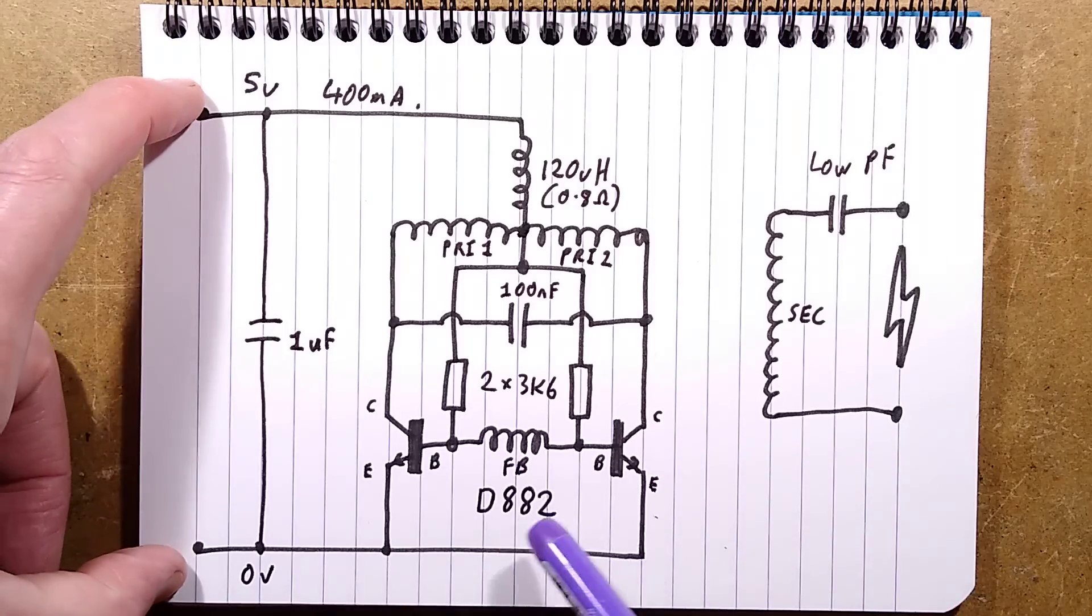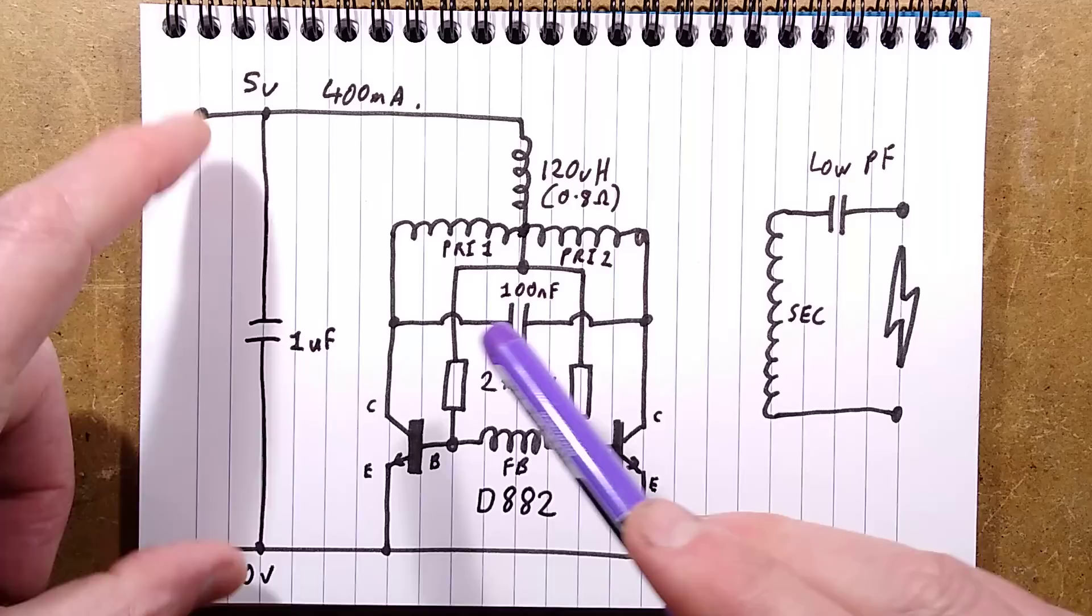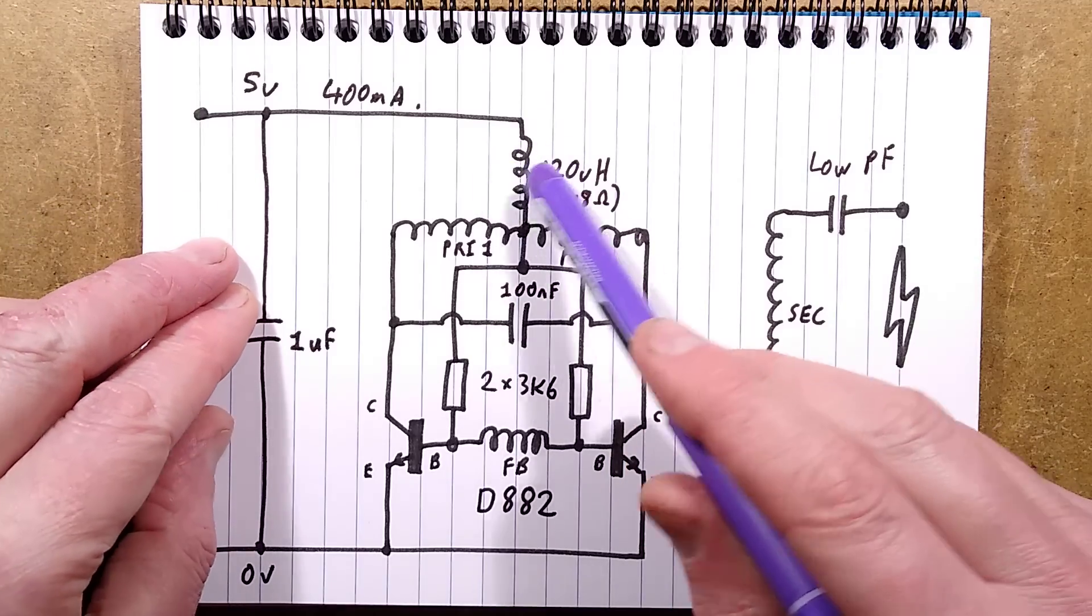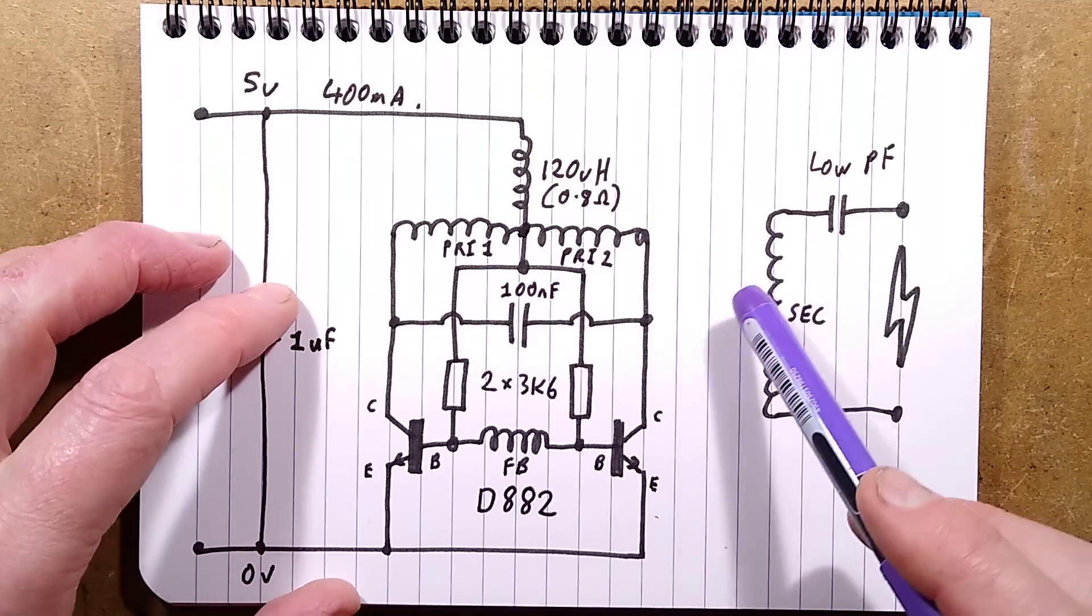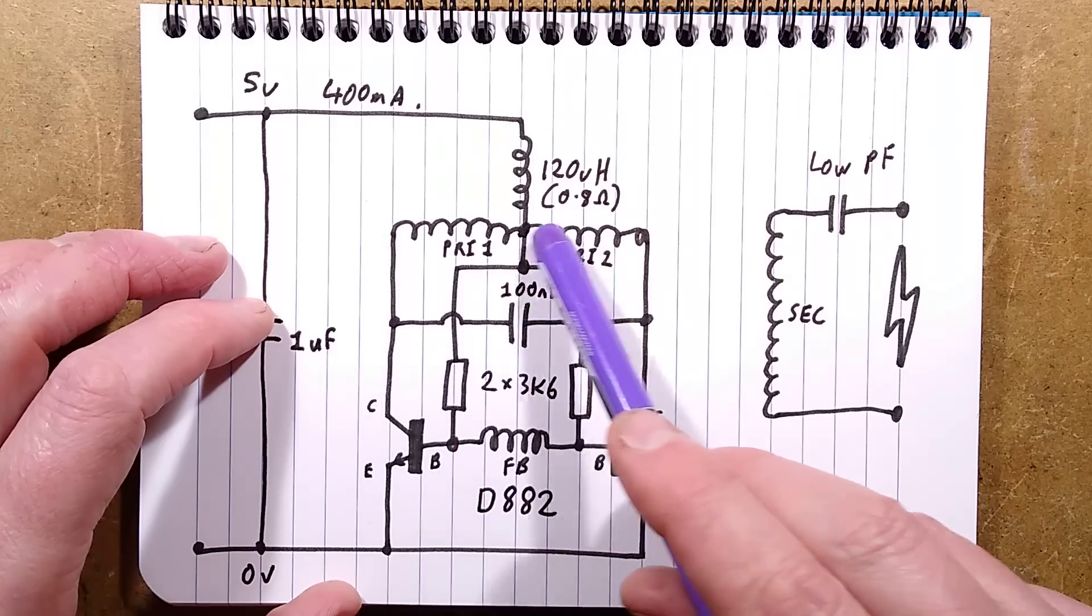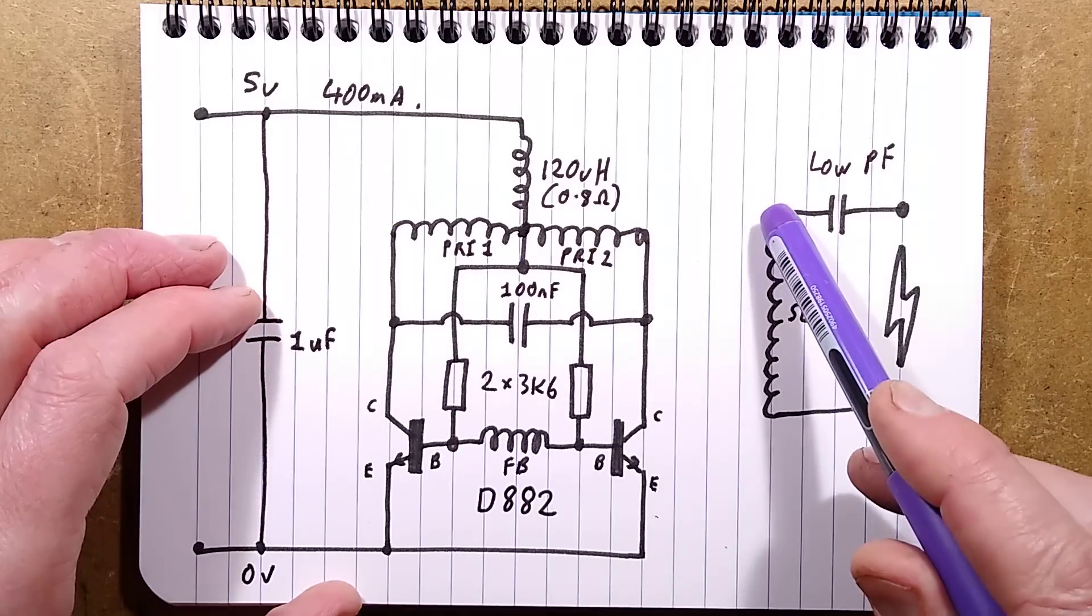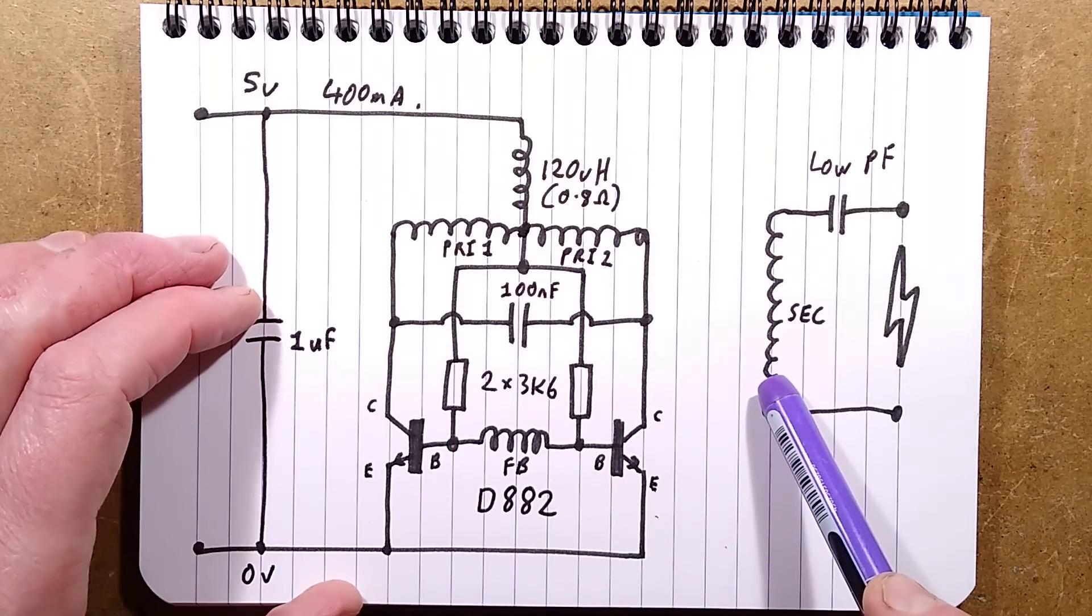So the incoming 5 volt supply has the 1 microfarad capacitor across it. There is a 120 microhenry inductor because I did take that off and measure it. And then the transformer has the centre tap primary winding, it's got a feedback winding and it's got the secondary winding, the high voltage winding.